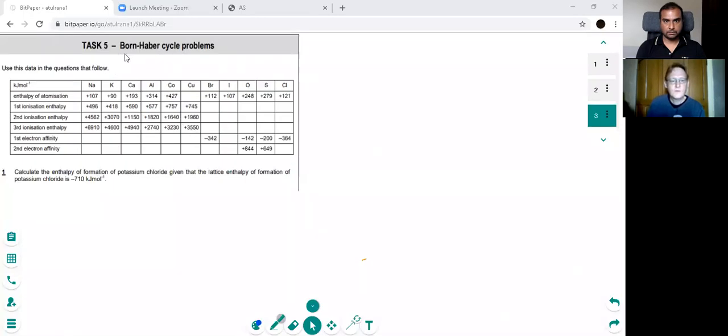Okay so I'll just share my screen and here we've got a Born-Haber Cycle problem. We've got to calculate the enthalpy of formation of potassium chloride given the lattice enthalpy of formation of potassium chloride is minus 710 kilojoules per mole. So let's have a go at doing our Born-Haber Cycle first. So I'll just draw a few lines on here.